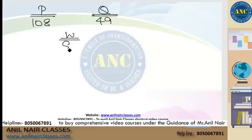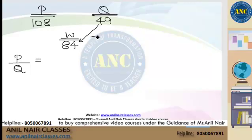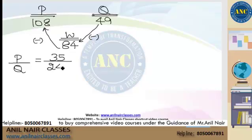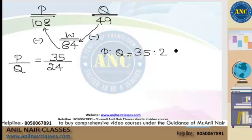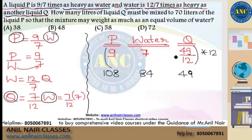Now applying the alligation method: P by Q ratio. We get 49 minus 84 = minus 35, and 108 minus 84 = minus 24 — but since both are negative, the negatives cancel. So P is to Q is 35 is to 24.